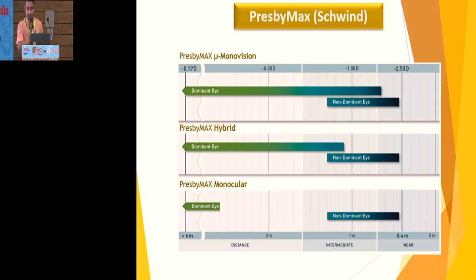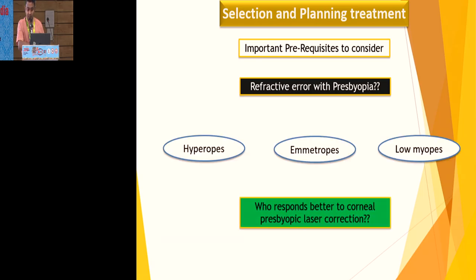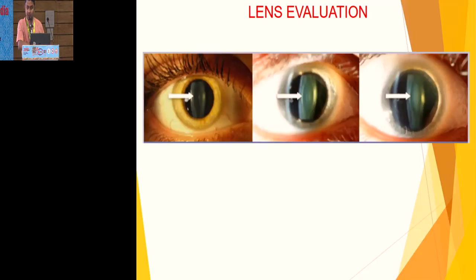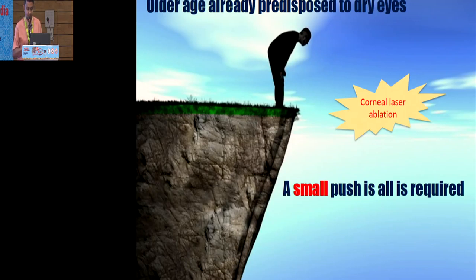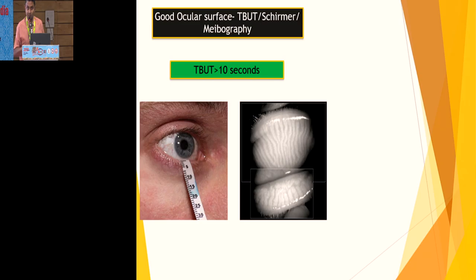Prerequisites for presbyopic LASIK are similar to other refractive surgery — dry eye evaluation, lens evaluation, and complete workup. I avoid this for patients just entering presbyopia, so for age 40 to 45 I avoid them. The range between 45 to 55 is more appropriate because these patients have already worn glasses, know it's cumbersome, and now want to get rid of them. Also check for dryness — presbyopic treatment should only be done with a LASIK or femto flap.